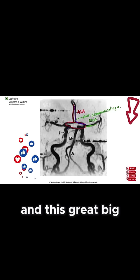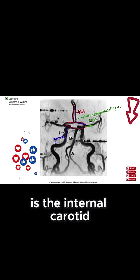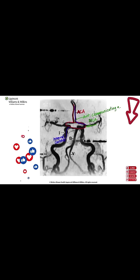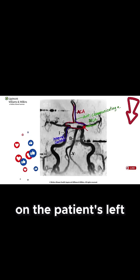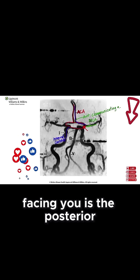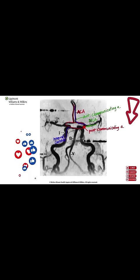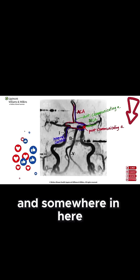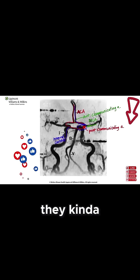And this great big fat artery is the internal carotid, which means that this — on the patient's left facing you — is the posterior communicating artery. And somewhere in here is the posterior cerebral artery, but they kind of get all jumbled up.